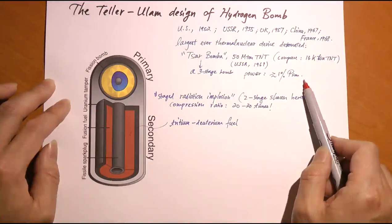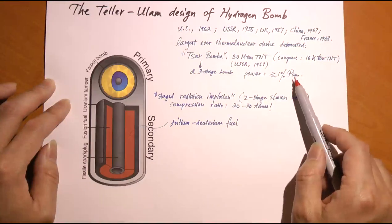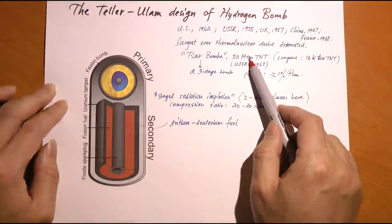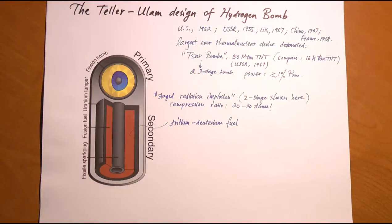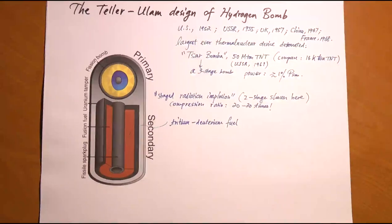Tsar Bomba was dropped from an airplane over a barren region of Siberia. The Russians had enough technology to build a bomb over 100 megatons, but the problem was that if they designed something that large, the fireball and radiation would expand so fast that the pilot could not fly away fast enough to escape. So they had to downgrade it to 50 megatons, which still holds the world record.